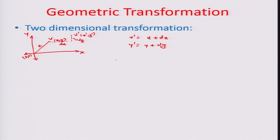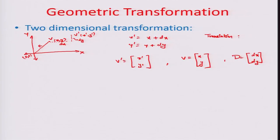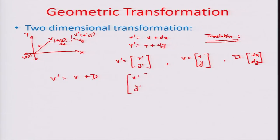The v-dash coordinate can be represented through a column vector [x-dash, y-dash], and vector v through [x, y]. There is a distance matrix representing the translation that has happened — we call that dx, dy. This gives the translation equation: v-dash equals v plus d, or in other words, the column vector [x-dash, y-dash] equals the column vector [x, y] plus the distance vector [dx, dy].